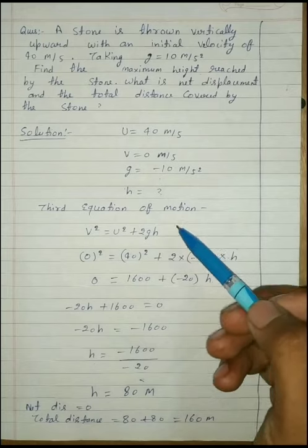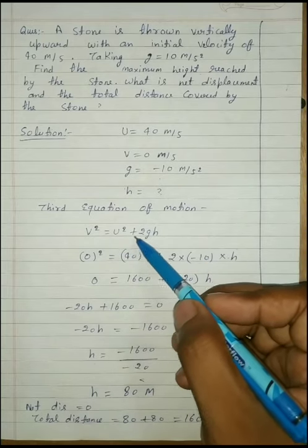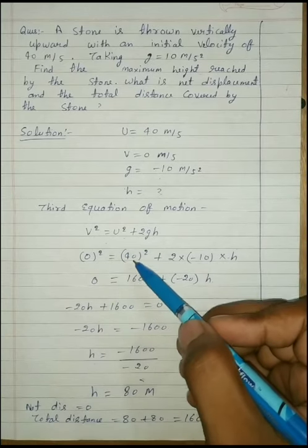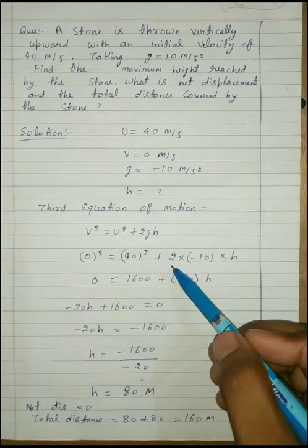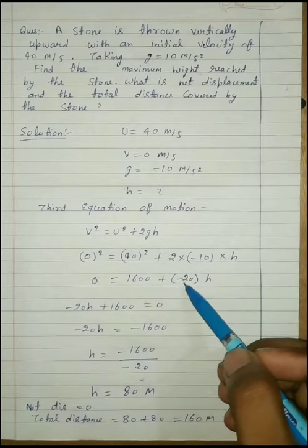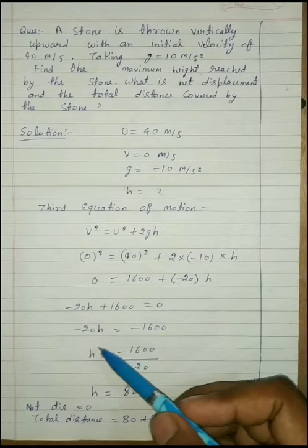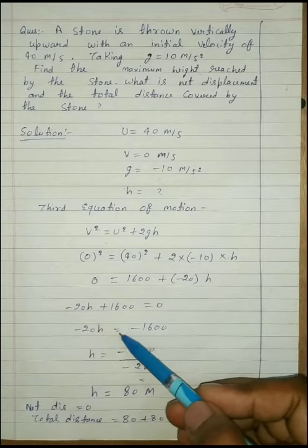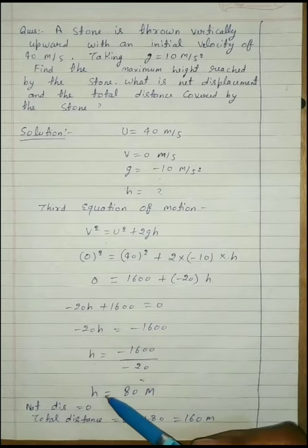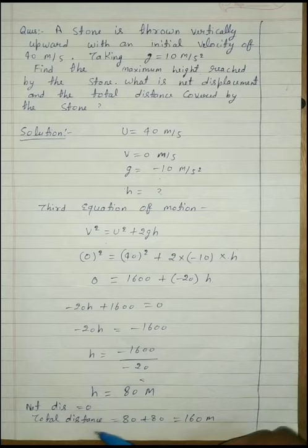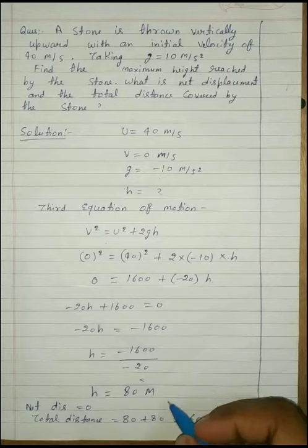Using the third equation of motion: v² = u² + 2gh. Final velocity v = 0 (object ends journey from rest at maximum height). Substituting: 0 = 40² + 2 × (−10) × h, which gives 0 = 1600 − 20h, so 20h = 1600, and h = 80 meters. This is the maximum height reached by the stone.